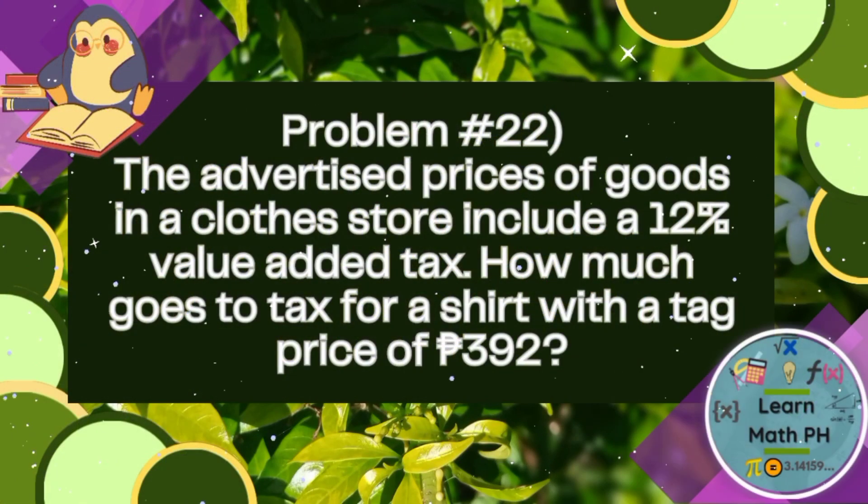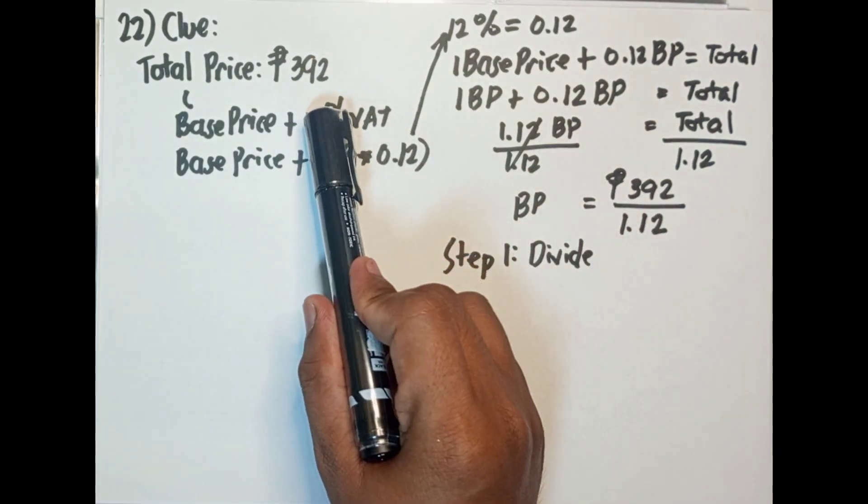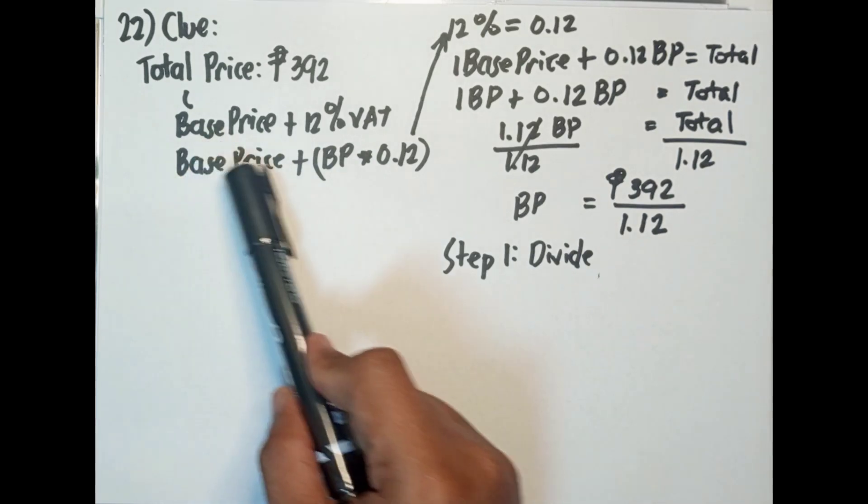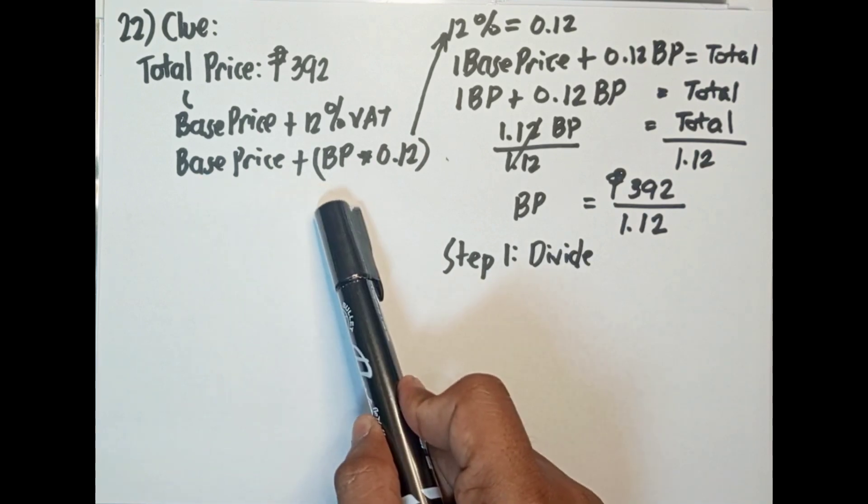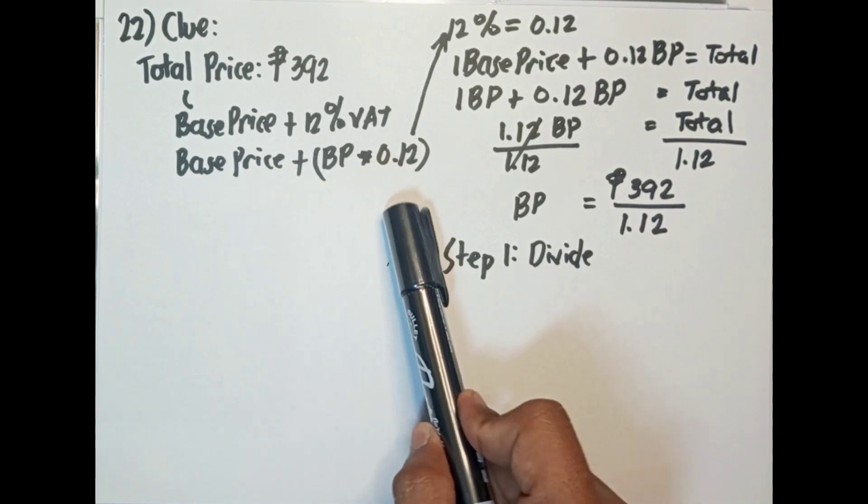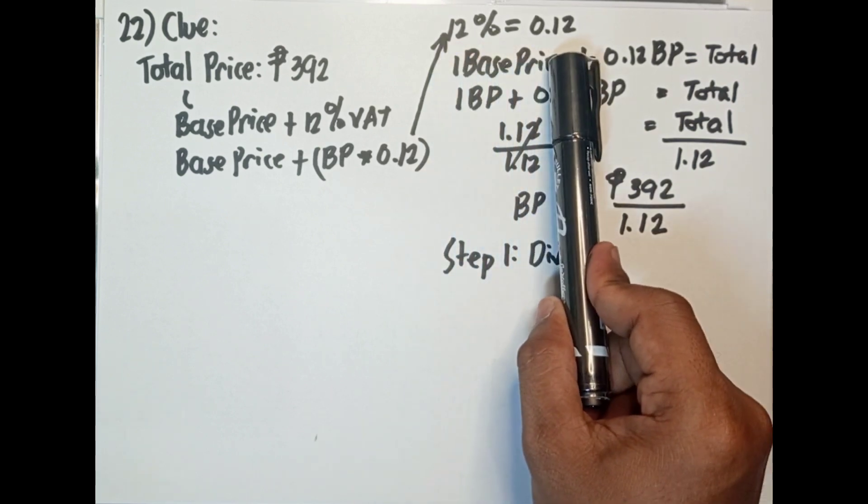Dito tayo sa problem number 22. The problem is, the advertised prices of goods in a clothes store include a 12% value-added tax. How much goes to tax for a shirt with a tag price of 392 pesos? Ang ating clue dito, alam natin na ang total price is 392 pesos. Ngayon, ang total price ay nakuha sa pamamagitan ng base price plus 12% VAT. Ibig sabihin, base price plus base price times 0.12. Saan natin nakuha yung 0.12? Kasi ang 12% is equivalent to 0.12.